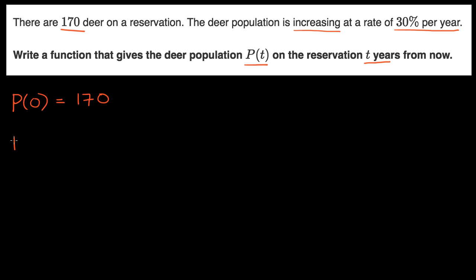Now, let's think about what P(1) is. What's going to be the population after one year? Well, it's going to be our original population, 170.